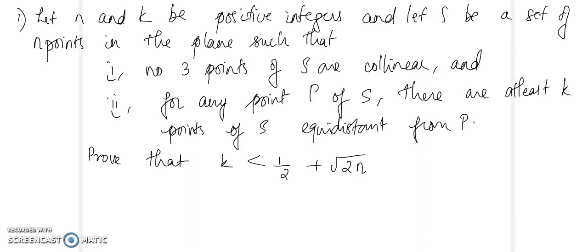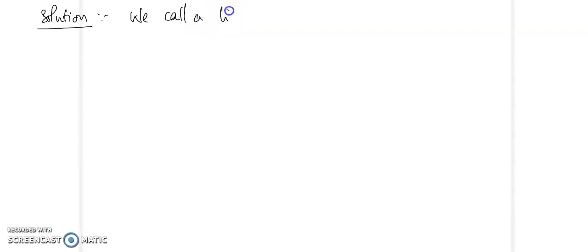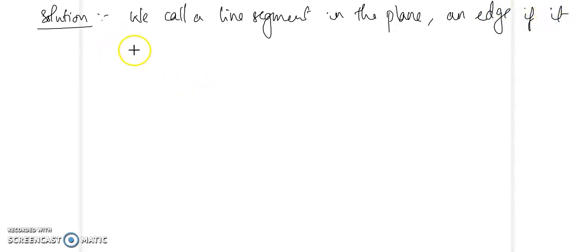In this problem we will look at the possible number of edges joining these points, and using this we will prove the inequality. We call a line segment an edge if it joins any two points in S.